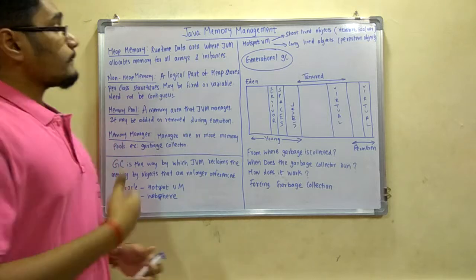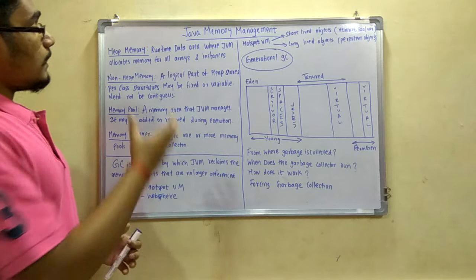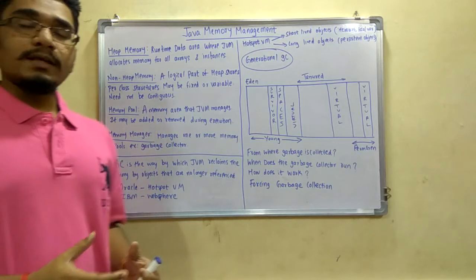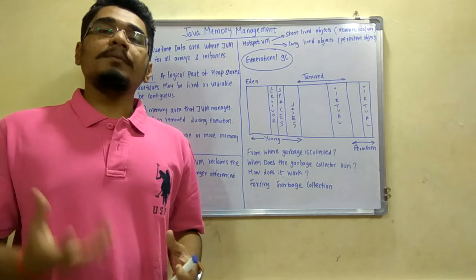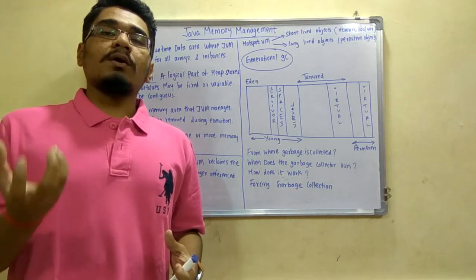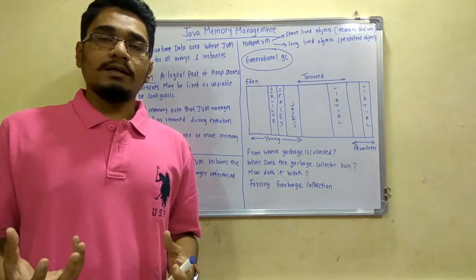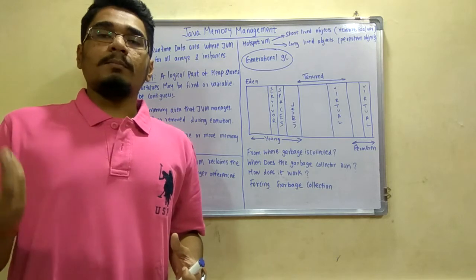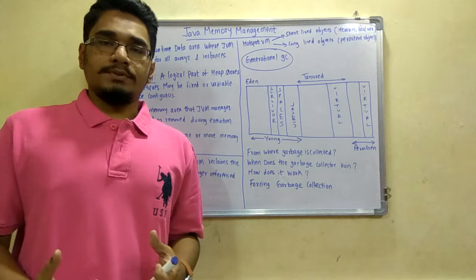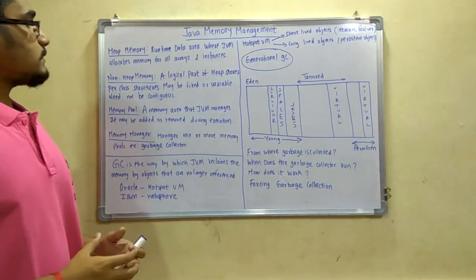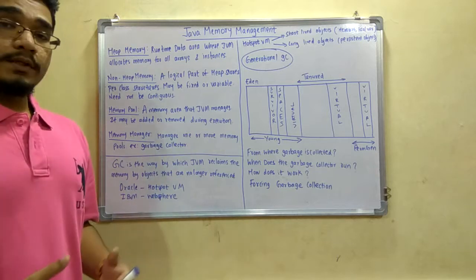First of all, what is heap memory? Heap memory is a runtime data area where the JVM allocates memory for all the arrays as well as the instances. As stated in JVM internals, it is where all the objects are created. At the start of program execution, the new operator allocates memory to all of the objects.